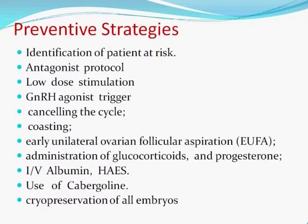Other preventive options include a GnRH agonist trigger instead of hCG trigger, cancelling the cycle — the incidence of which is reduced in today's era — coasting or ovarian follicular aspiration. Administration of glucocorticoids and progesterone has been reported in a few studies to reduce the incidence. More commonly used are IV albumin or hydroxyethyl starch. Use of cabergoline also has good results. And lastly, cryopreservation of all embryos followed by frozen embryo transfer.